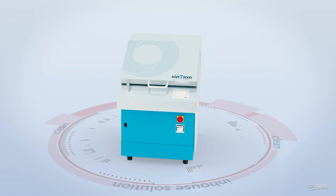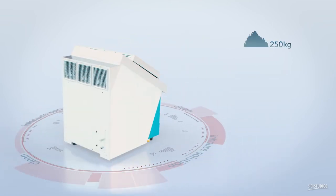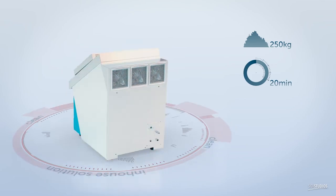Every day, one Cyntheon unit takes care of 250 kg of waste and it only takes 20 minutes per cycle.